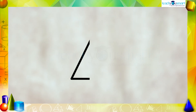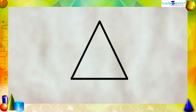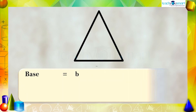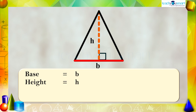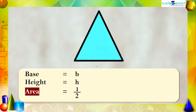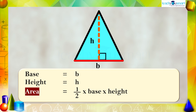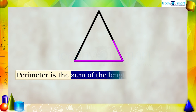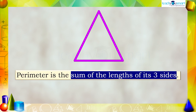Let's recall one by one. What is it? Yes, it's a triangle — it's a two-dimensional shape. If we take the base of the triangle as b and the perpendicular distance to the base — that is, the height — as h, then the area of the triangle equals one-half multiplied by the base multiplied by the height. That is, A = ½bh. And its perimeter is the sum of the lengths of its three sides.